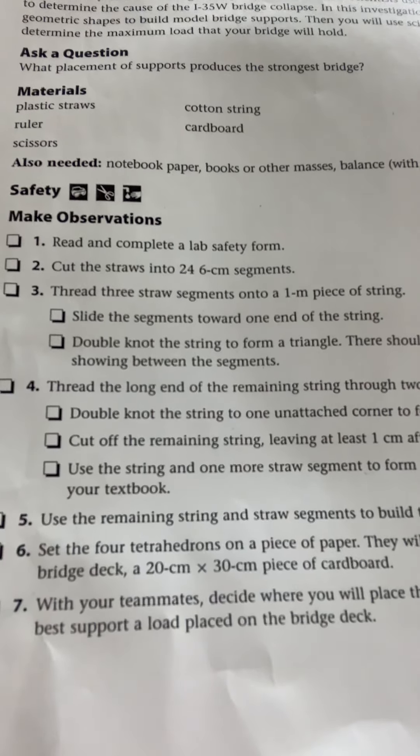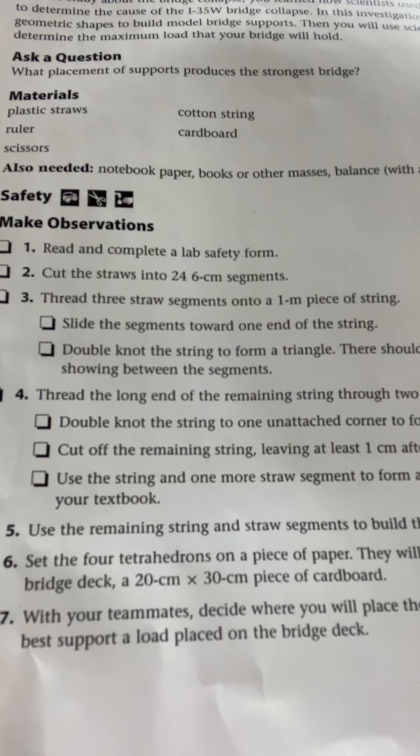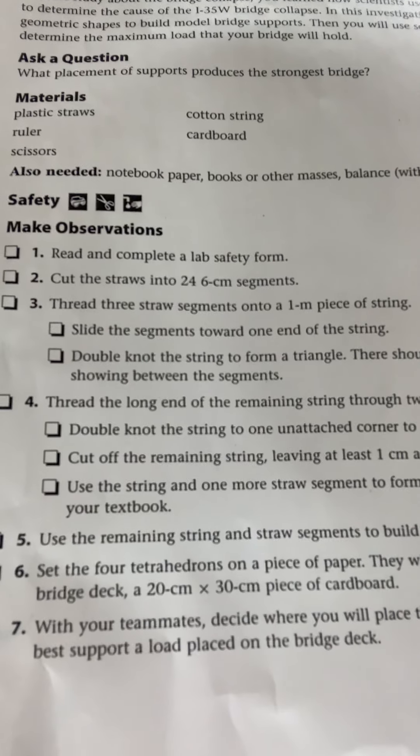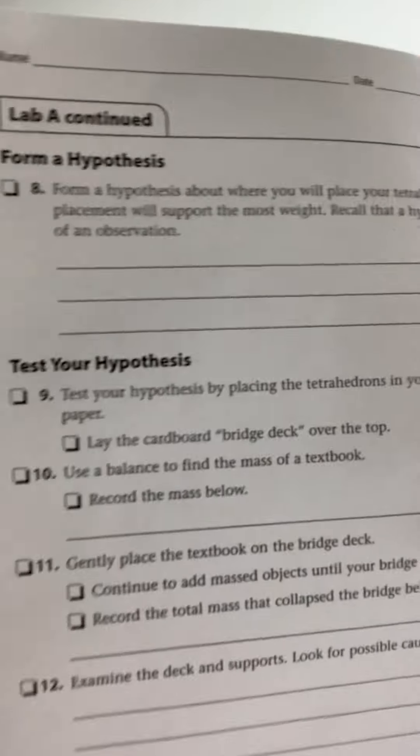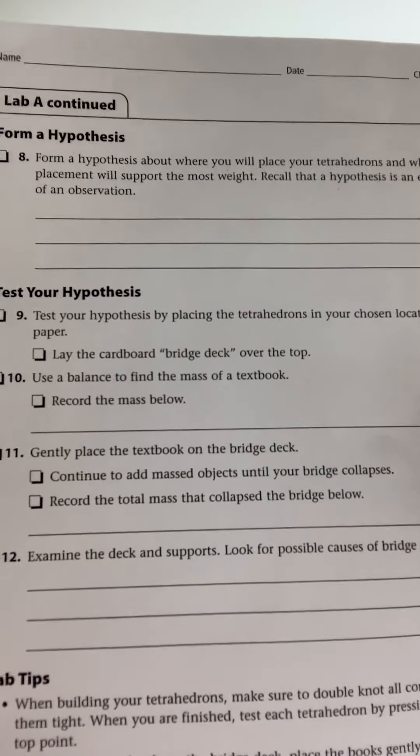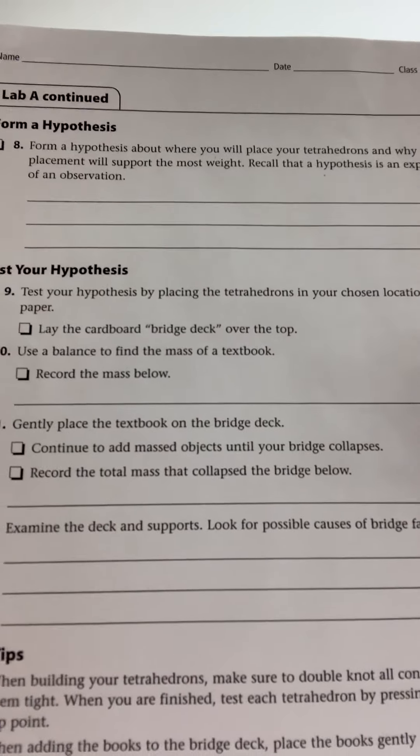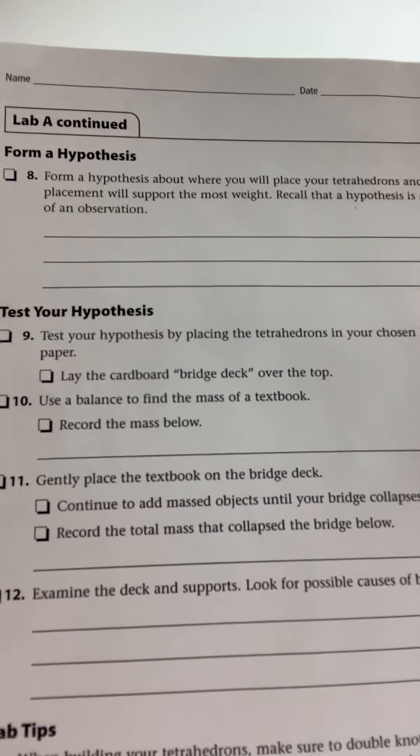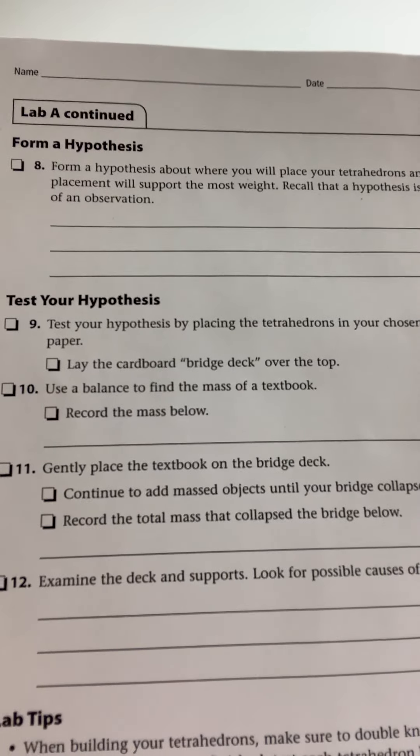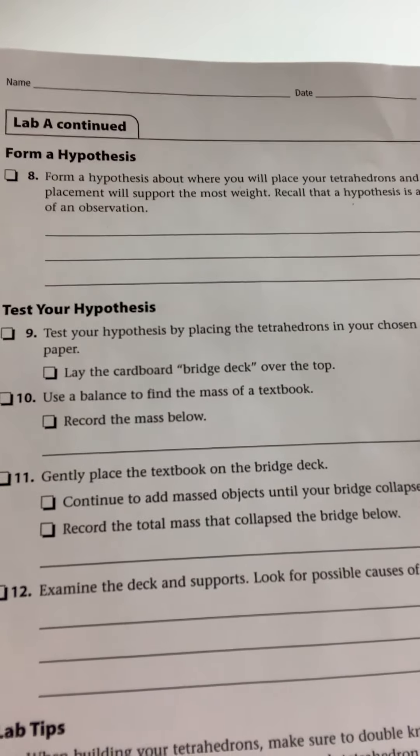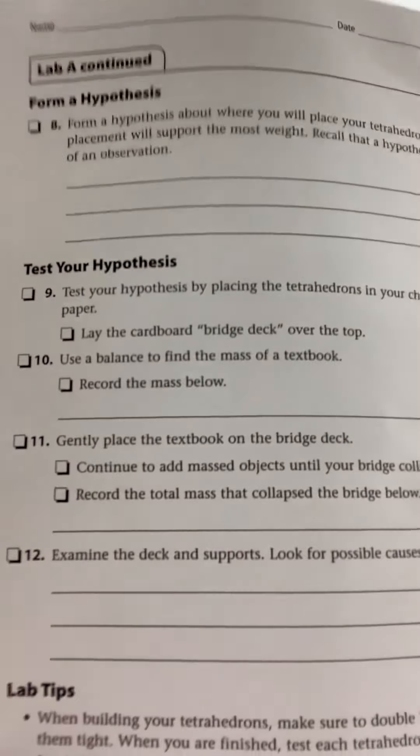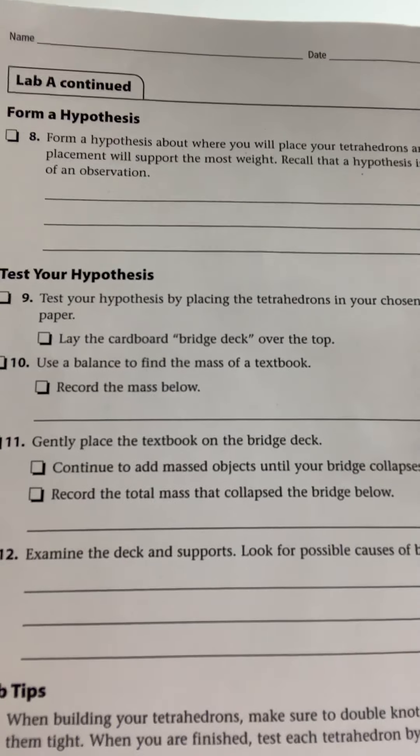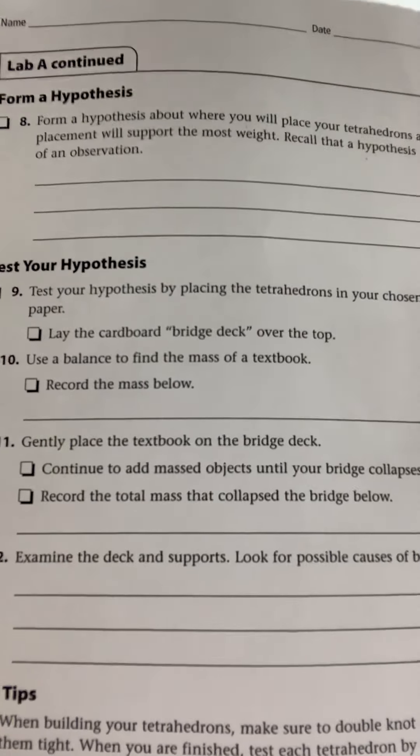At this point, let's go ahead and look at number eight on your lab sheet. Turn to this page, and on number eight it says form a hypothesis. In this particular lab, what I really would like you to do is draw a picture hypothesis of where you'd like to place your tetrahedrons, and you're going to actually guess how many books or how much mass you think your tetrahedrons will hold.